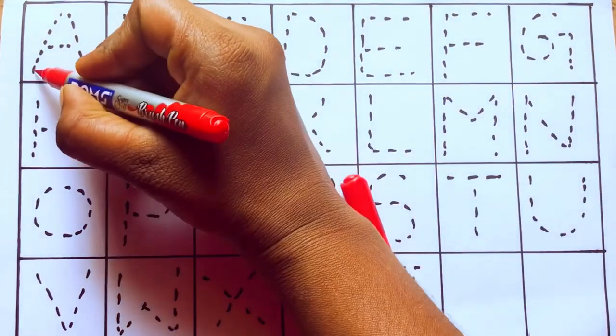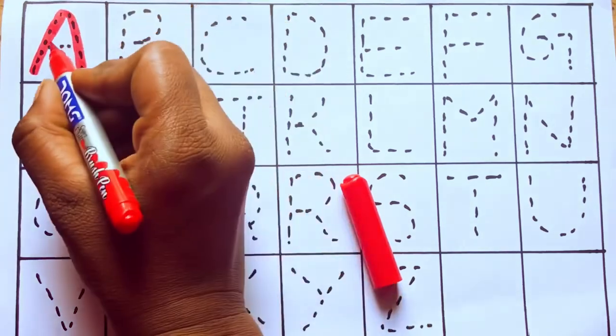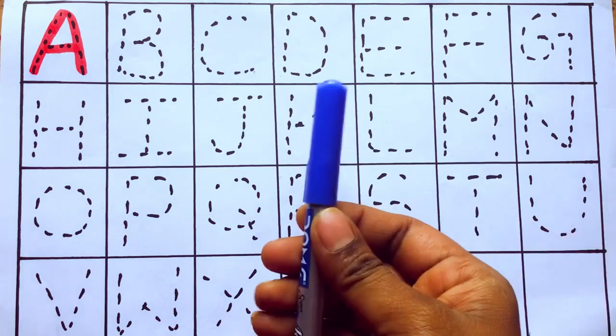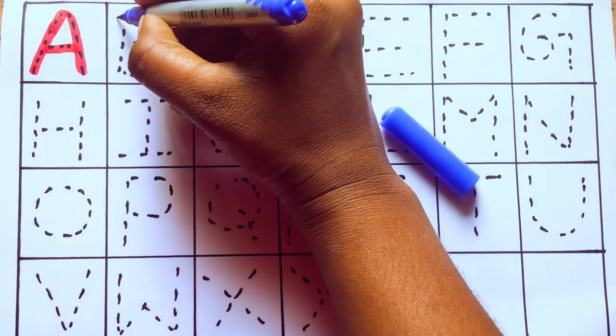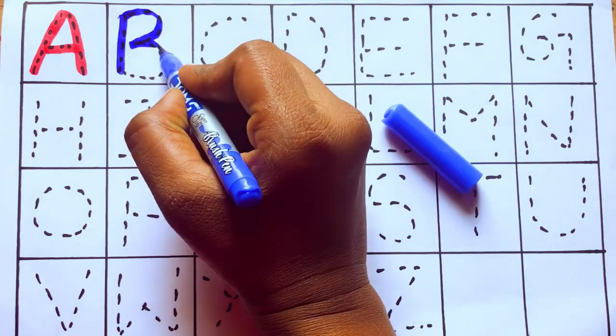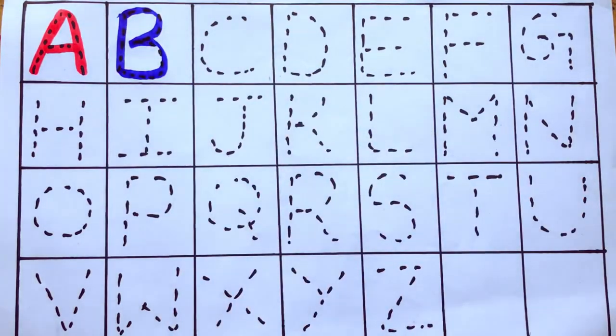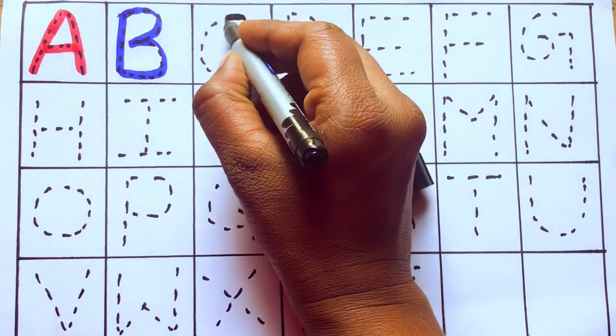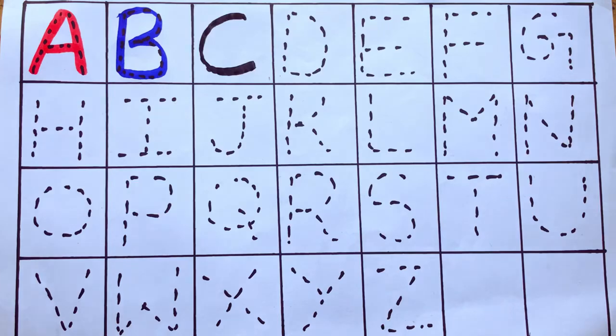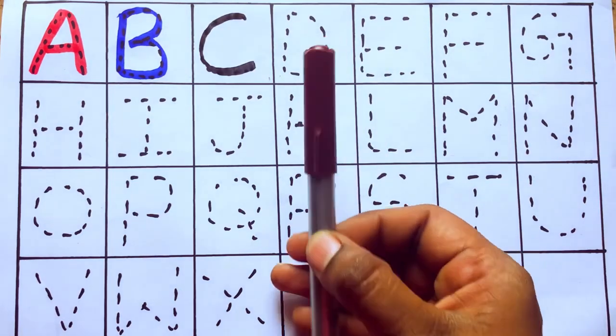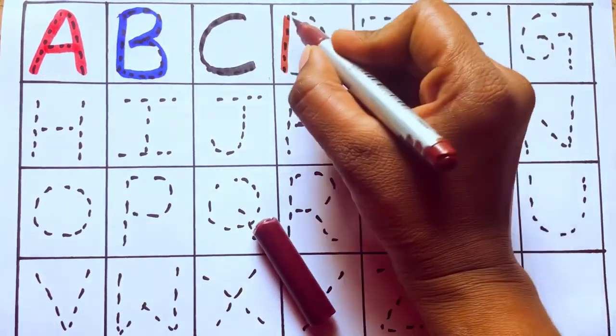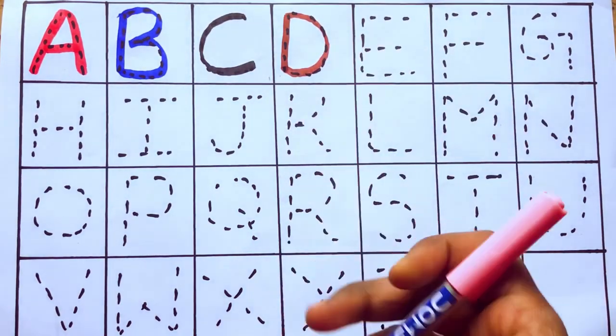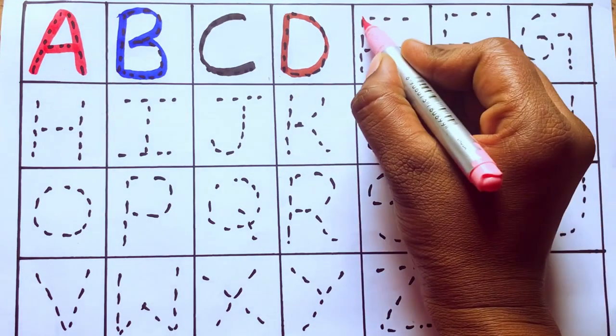A for apple. B for ball. C for cat. D for dog. E for egg.